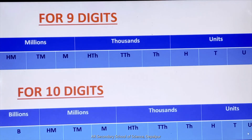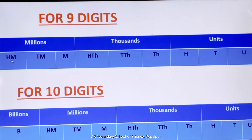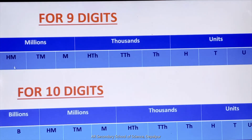Now see the place value chart for ten digits: Unit, Tens, Hundred, Thousand, Ten Thousand, Hundred Thousand, Million, Ten Million, Hundred Million, and Billion. Nine digits ke place value chart mein places Hundred Million tak thi. Ten digits ke place value chart mein places Billion tak chali gayi hain. Jaise hi hum number increase karte hain, hamara place value chart bhi expand ho jata hai.